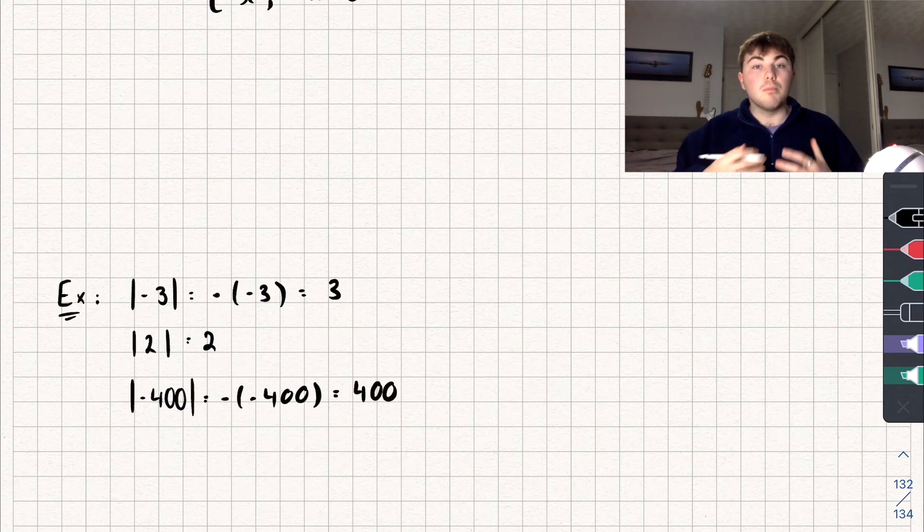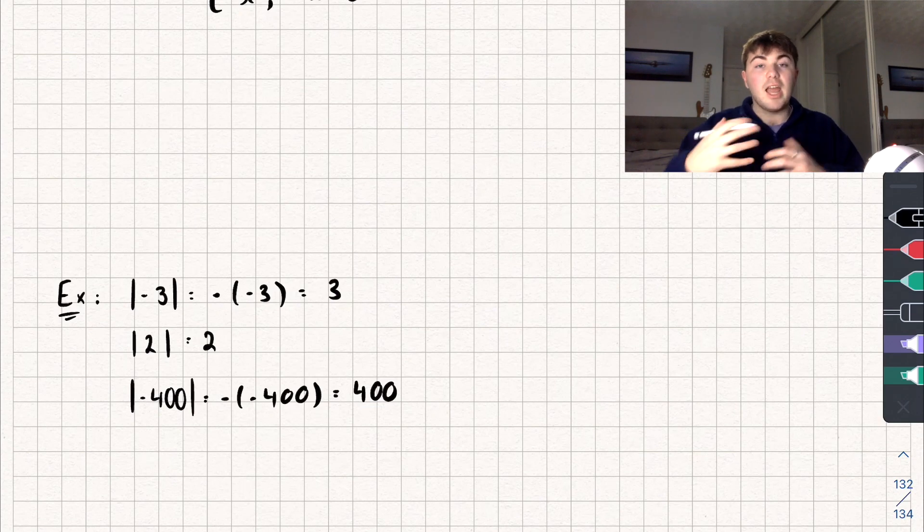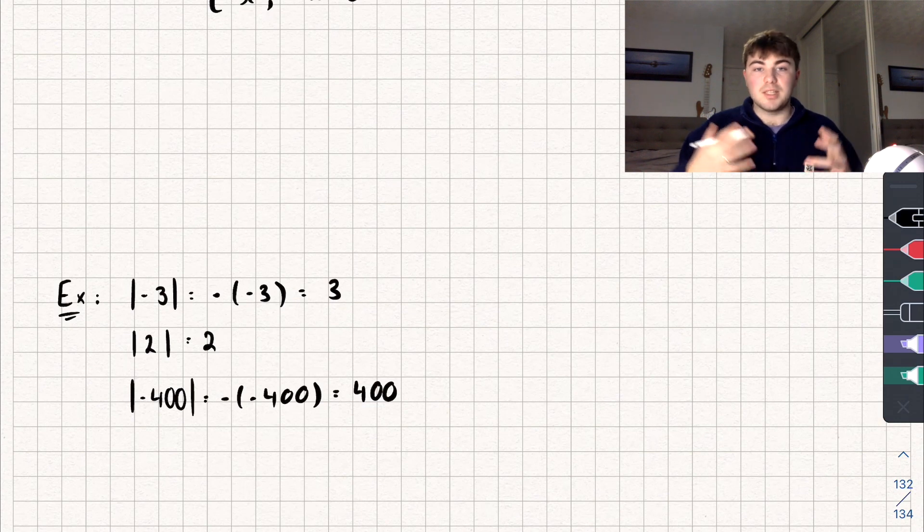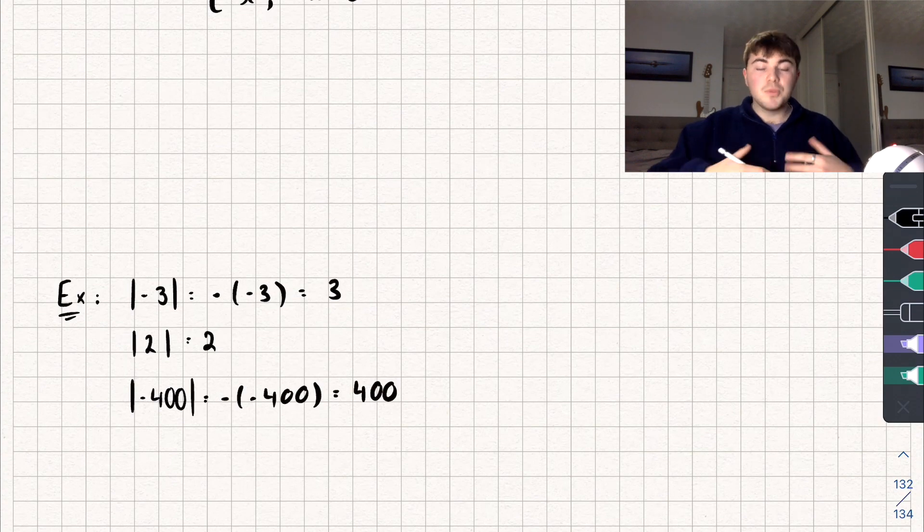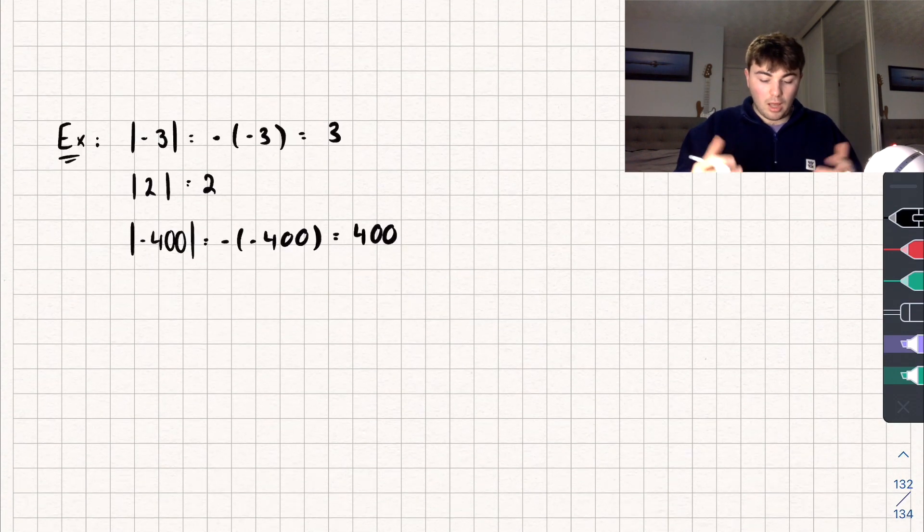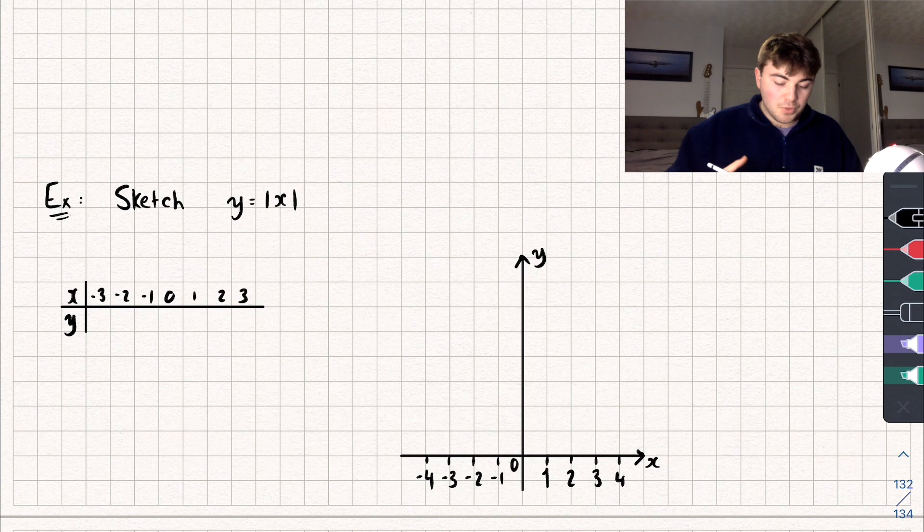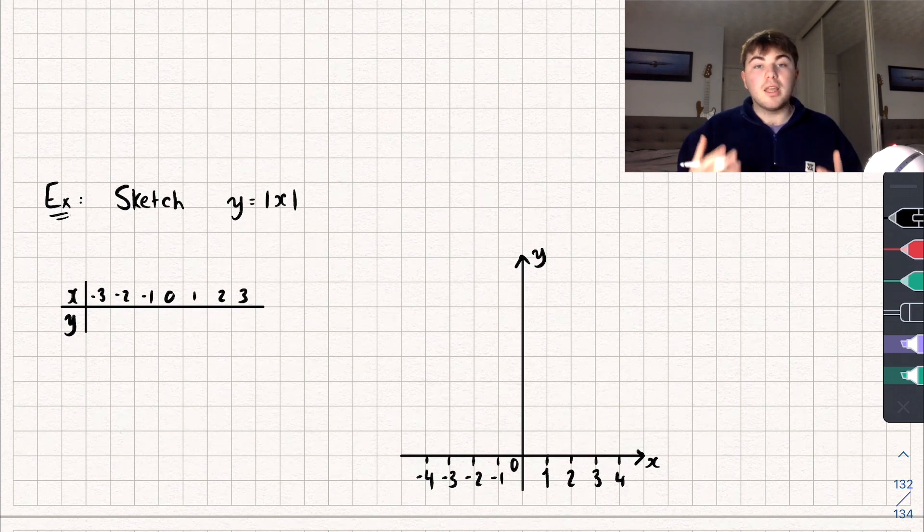So hopefully you can see the modulus function is taking any negative value and just turning it positive. If it's already positive then it just keeps it as it is. So that's the modulus function. In the next video we're going to be taking a look at modulus graphs. Just to give you an idea of what they look like, let's take a look at this example here. We want to sketch the graph of y equals the absolute value of x, or modulus x.